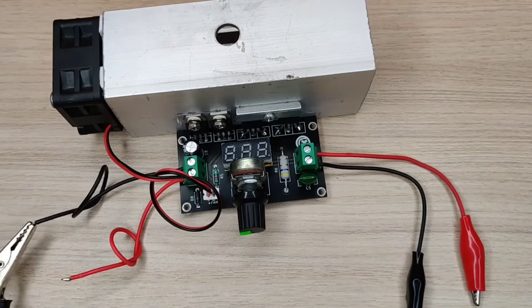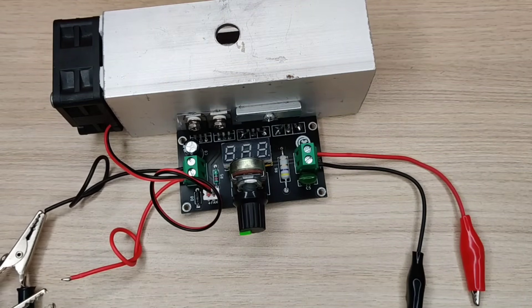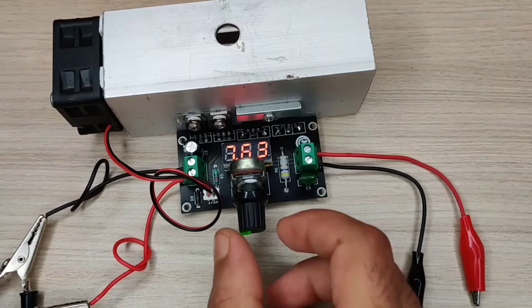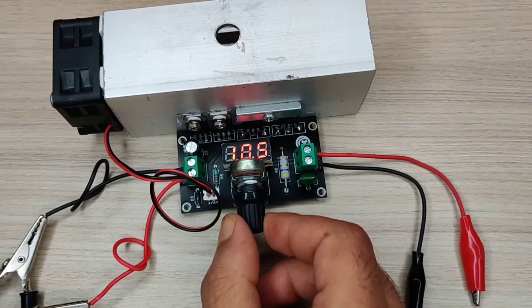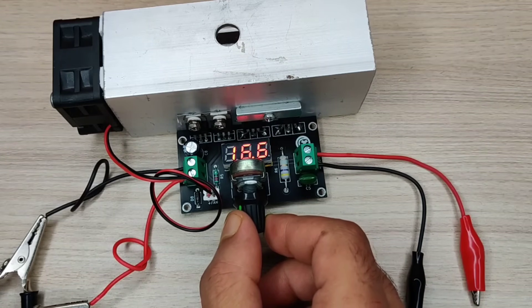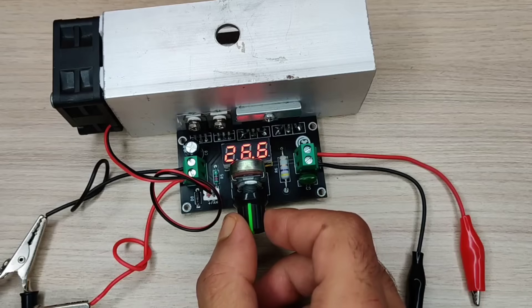Now let's connect the input DC supply. The output voltage can be set with this potentiometer. And the best part, output voltage can be seen on the display.